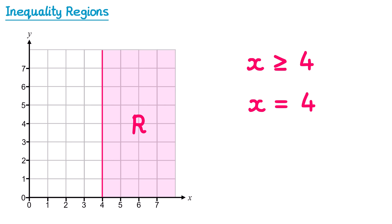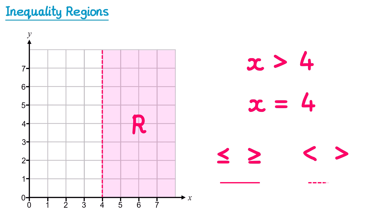Sometimes the inequality won't have the 'or equal to' part — for example, x is greater than 4. If x is strictly greater than 4, it cannot equal 4, so we're no longer allowed to be on the boundary line. To distinguish between the two types, instead of a solid line we draw a dotted line. This represents that we can't be on the line itself. So: less than or equal to / greater than or equal to → solid line; less than / greater than → dotted line.